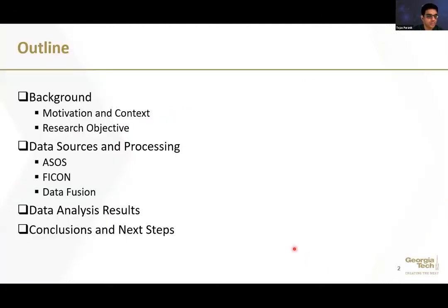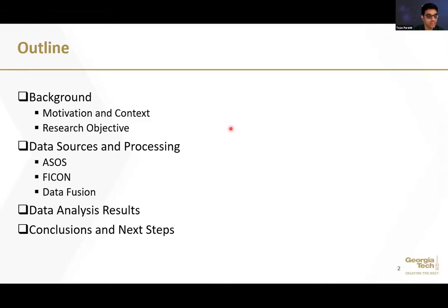Here is a brief outline of the talk. First, I'll start with the background of the work, including some of the motivation and context of what we are trying to achieve. Following that, I will lay out the specific research objectives, keeping in mind that this is part of a broader project. I'll then go into the data sources and pre-processing pipelines, followed by analysis results, conclusions, and next steps.